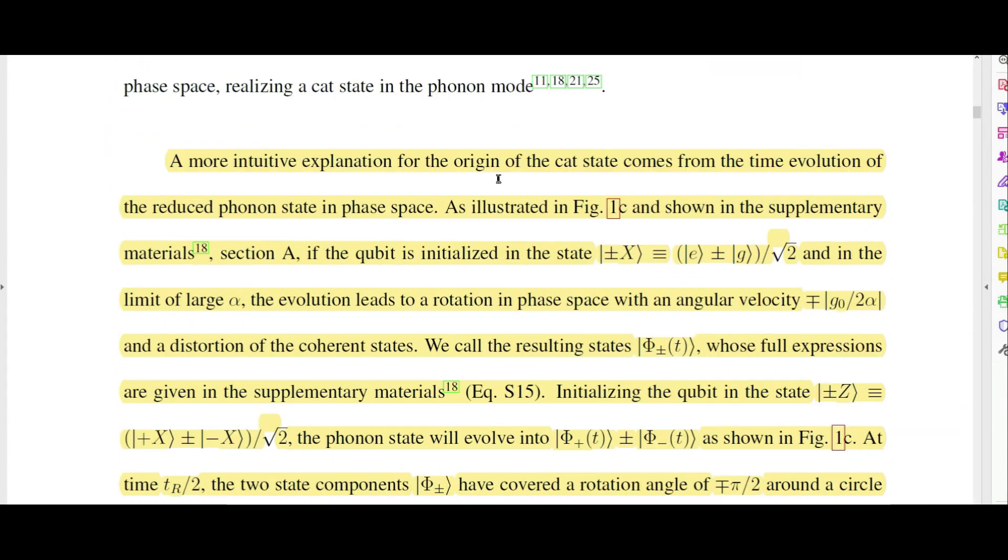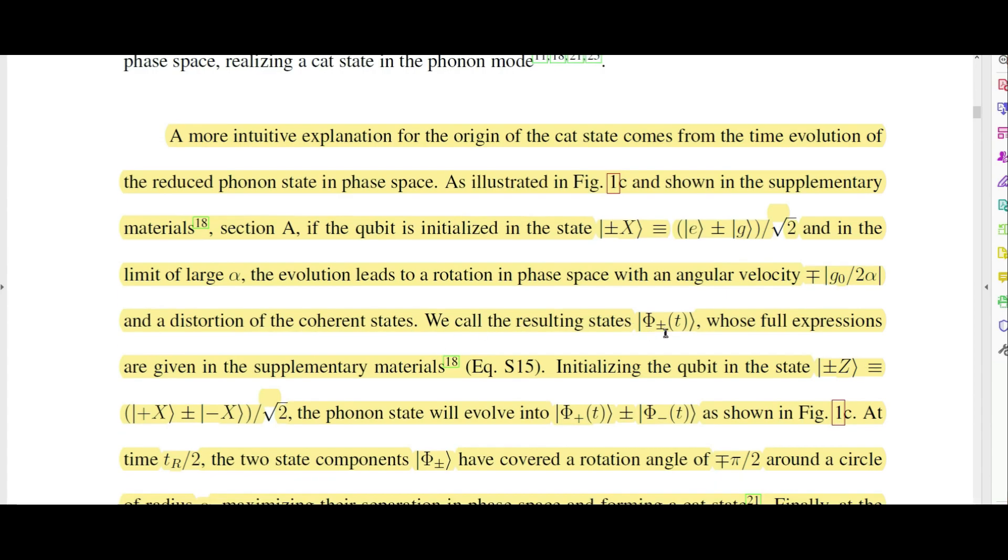A more intuitive explanation for the origin of the cat state comes from the time evolution of the reduced phonon state in phase space, illustrated in Figure 1c. If the qubit is initialized in this state—this qubit is initialized in this superposition of e, which is the excited state, and g, which is the ground state—in the limit of large amplitude, the evolution leads to a rotation in phase space with this angular velocity and a distortion of the coherent states.